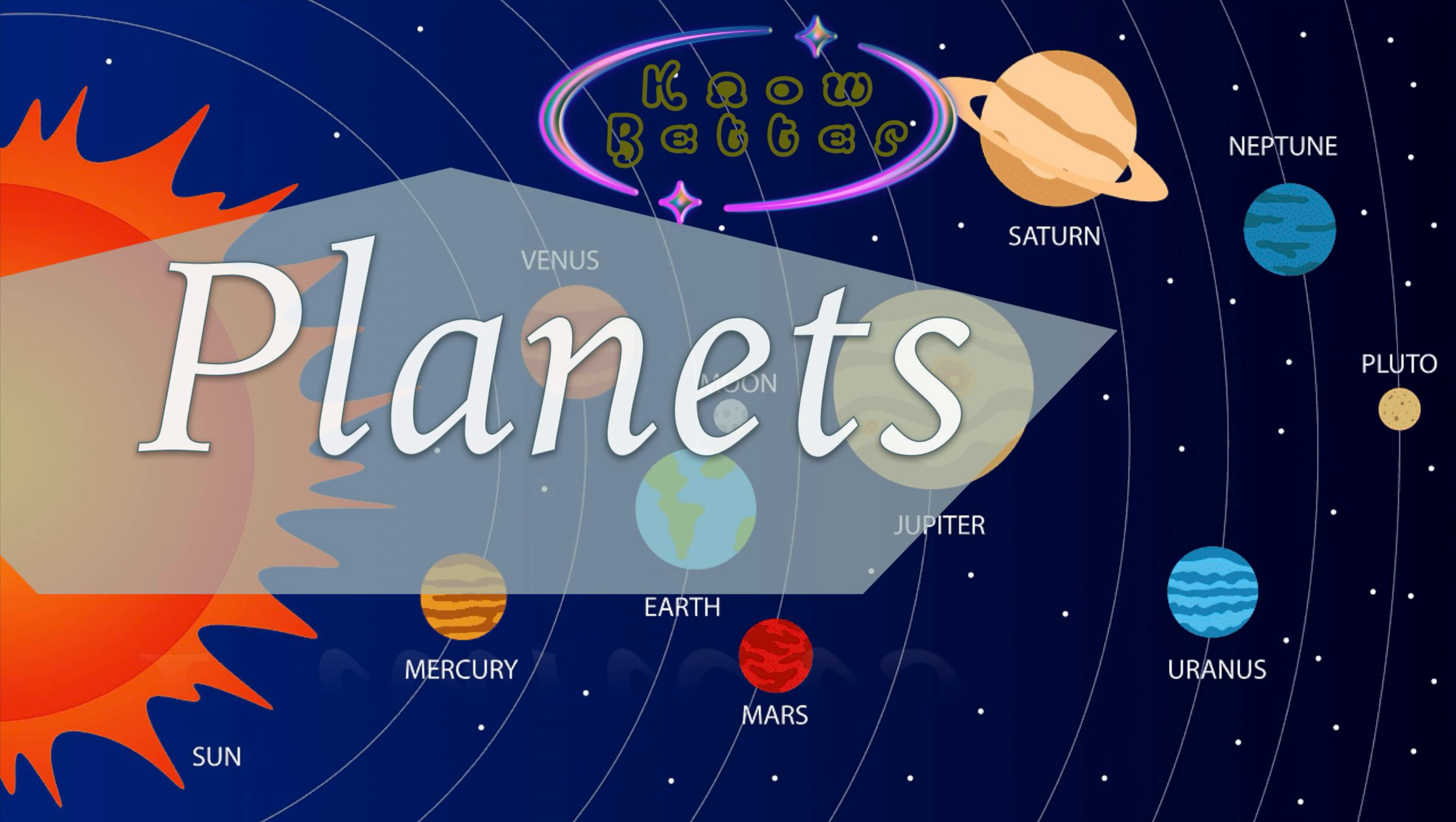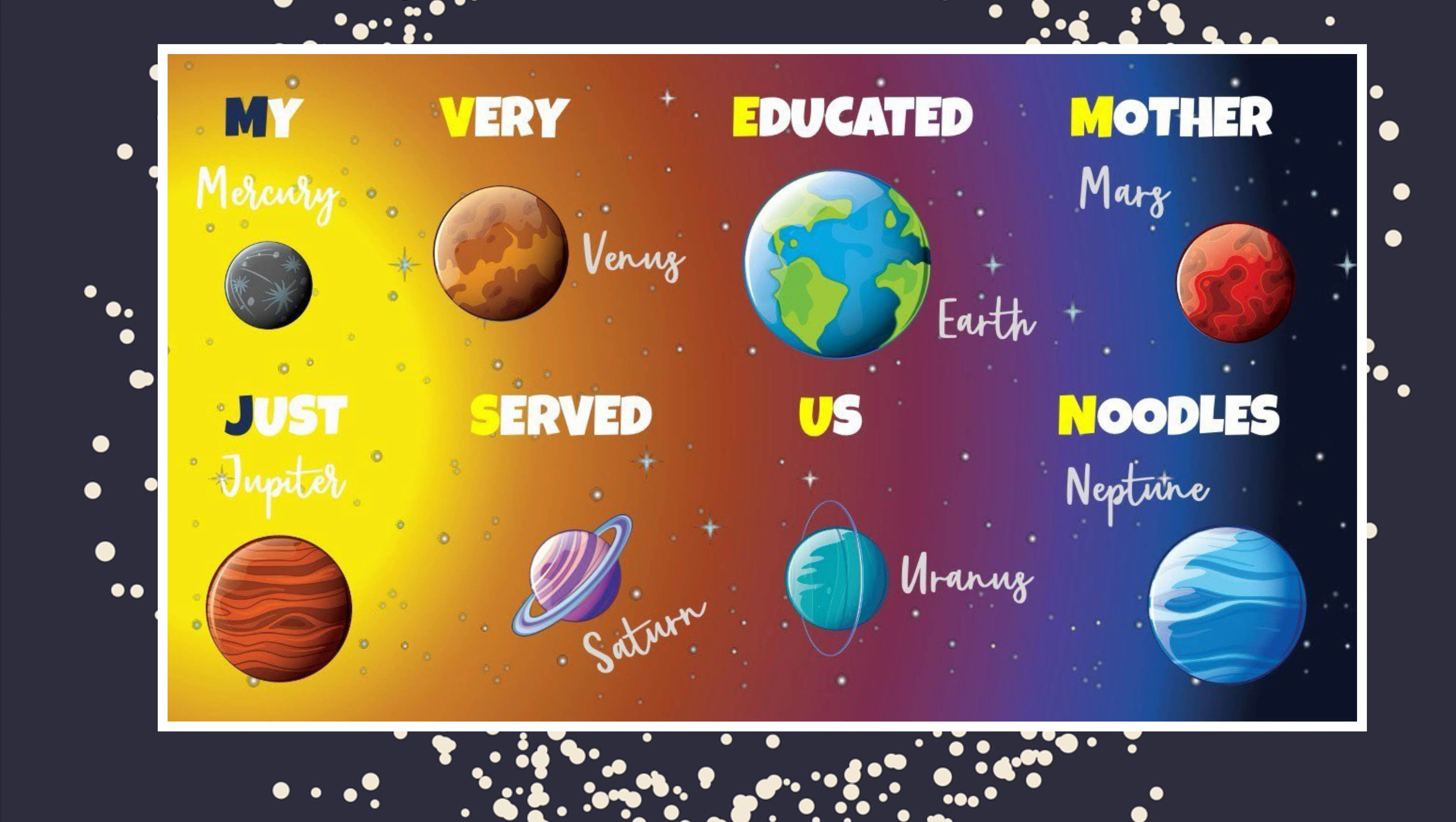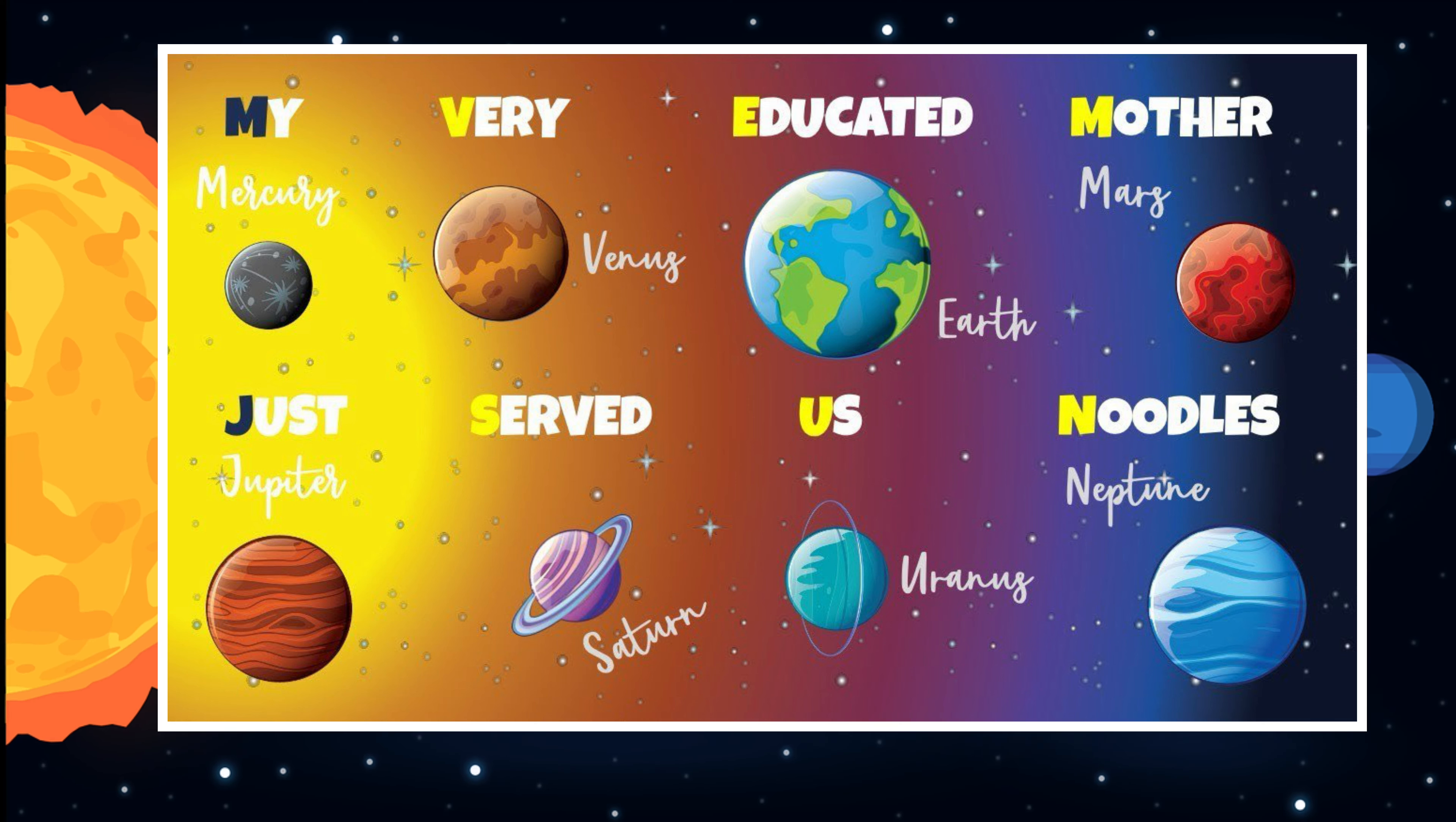Welcome back, we are going to discuss planets. My Very Educated Mother Just Served Us Noodles. There are eight planets in our solar system. To remember this easily, we can use My Very Educated Mother Just Served Us Noodles. M stands for Mercury, from Very we get Venus, Educated we get Earth, Mother stands for Mars, Just is Jupiter, Served is Saturn, Us is Uranus, and Noodles is Neptune.